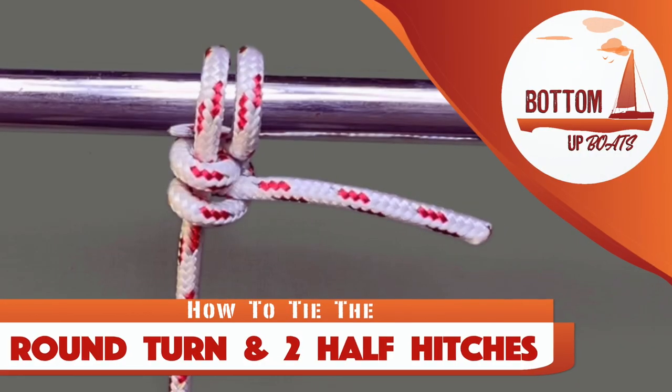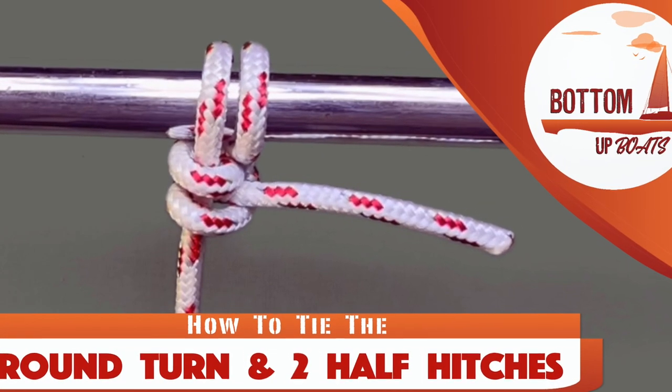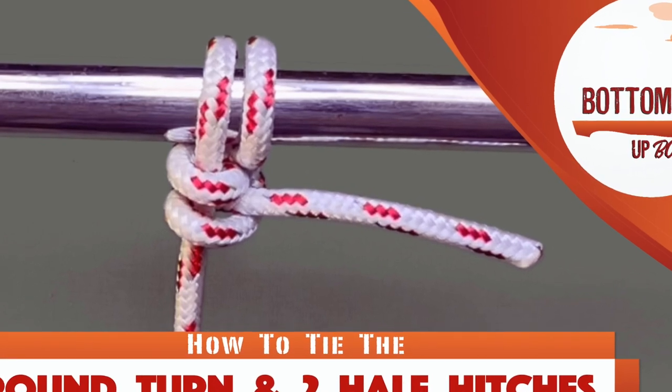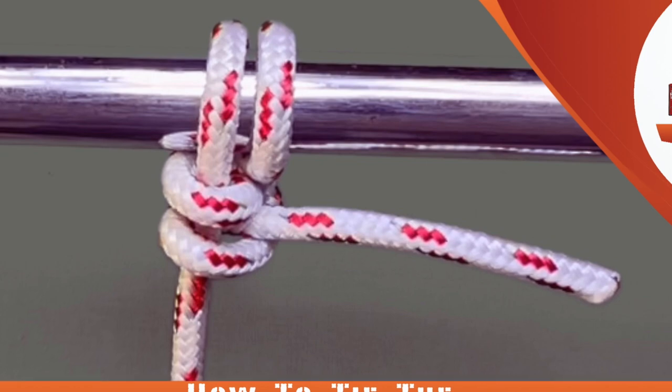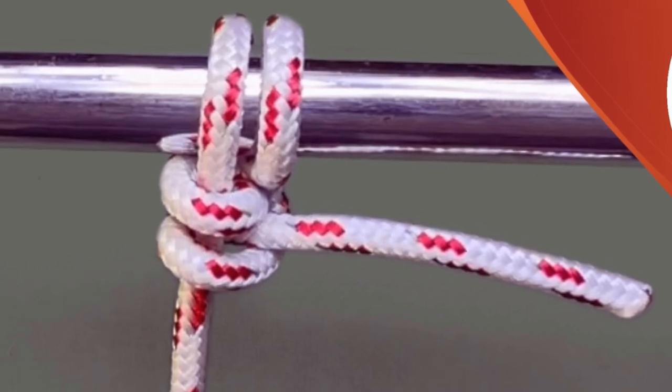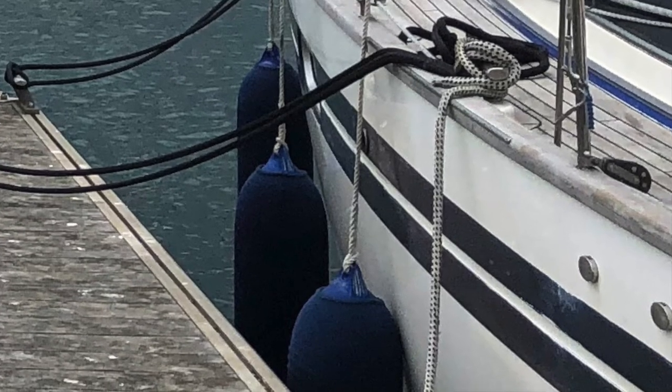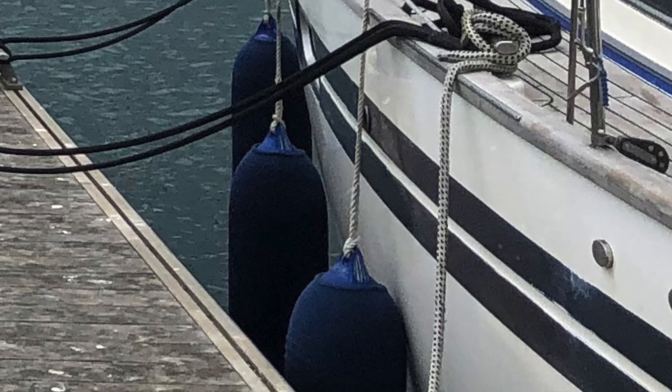G'day and welcome to today's Bottom Up Boats No Knots episode, where we show you how to tie the round turn with two half hitches. This is a must-know knot for all crew members, perfect for tying your fenders off lifelines.